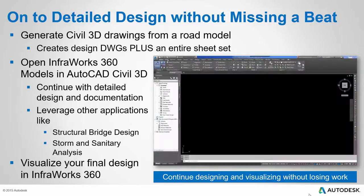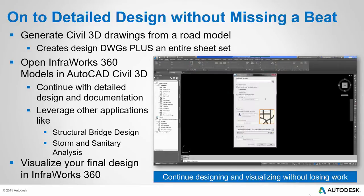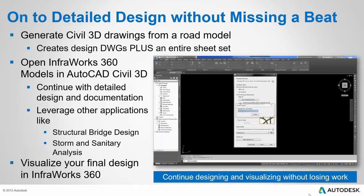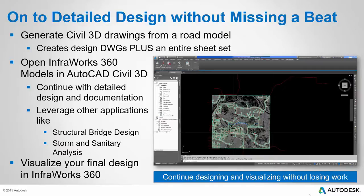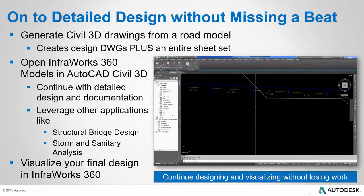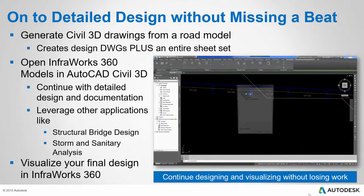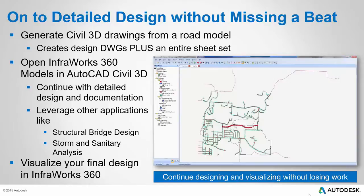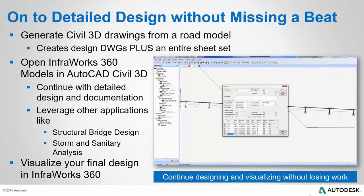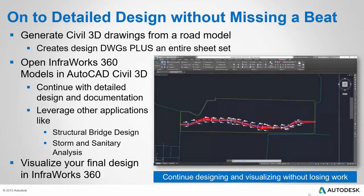In this example, we see this functionality being leveraged with storm design, where our user is opening an InfraWorks 360 model in Civil 3D. This model happens to contain some underground storm pipes and structures, and as we zoom in, those pipes and structures have come in as Civil 3D objects, with their locations, elevations, and sizes respected from InfraWorks 360. We can take that even a step further by jumping into storm and sanitary analysis and doing a very detailed engineering analysis and design on the individual components of that system. So we can jump from preliminary design to this very detailed design very easily and without losing work and effort.